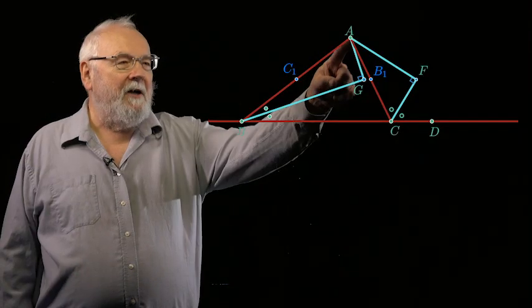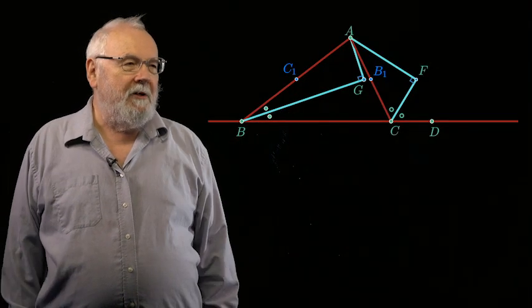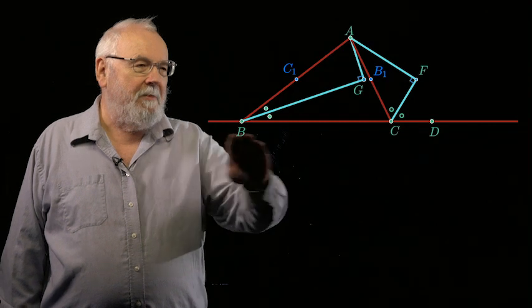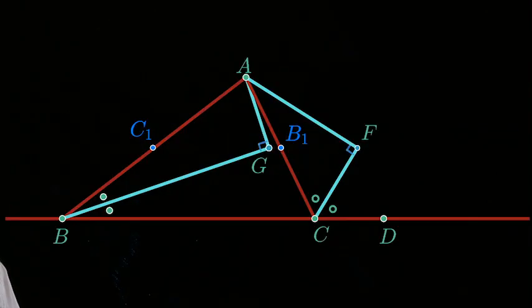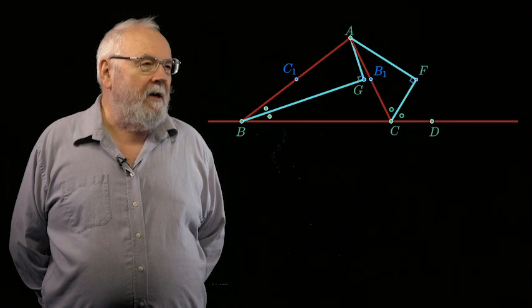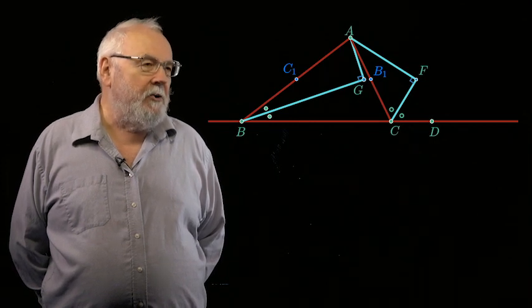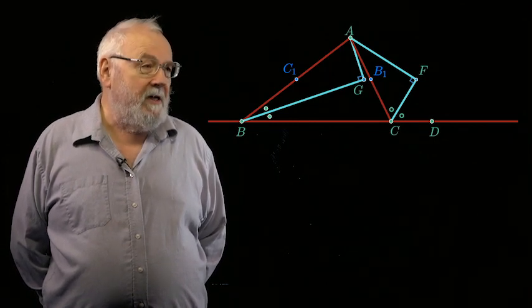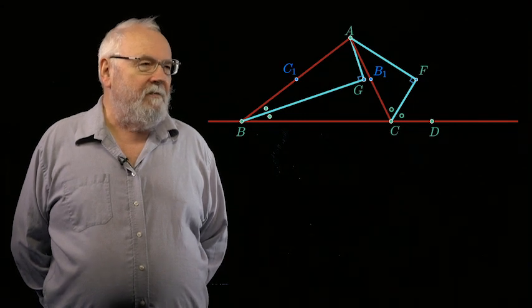So here we have our triangle ABC drawn in red, and the line BC has been extended. We've added the extra segments mentioned in the problem statement, so you can see those two right angles and the points F and G. And we're supposed to show that the straight line through F and G passes through the points B1 and C1. And that sort of looks right.